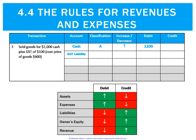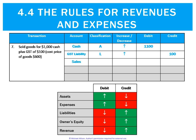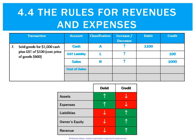Looking at the GST part — GST is a liability, and since we are the one collecting it, that increases our liability, so it must go on the credit side. Then the sale amount is a revenue that is increasing, and revenues must increase on the credit side. So we have a debit of $1,100 matched by two credits of $1,000 and $100 — debits equal credits.